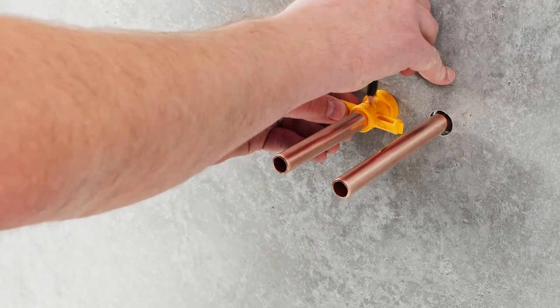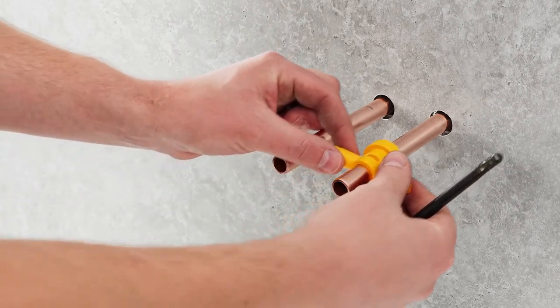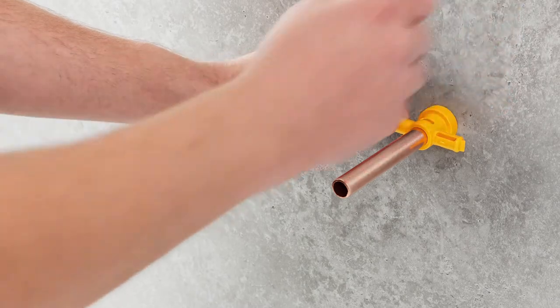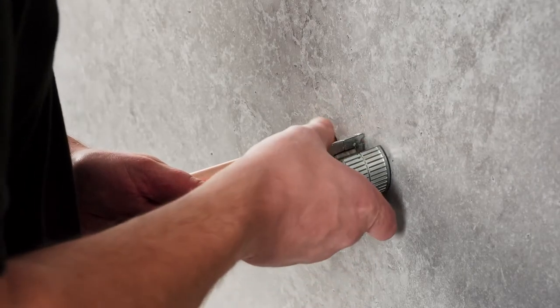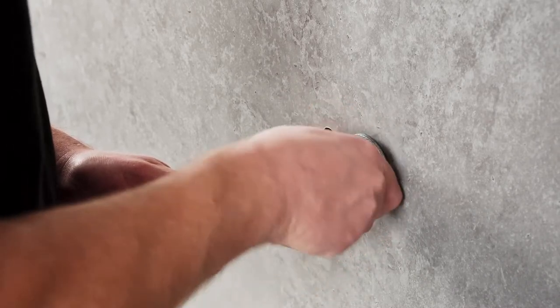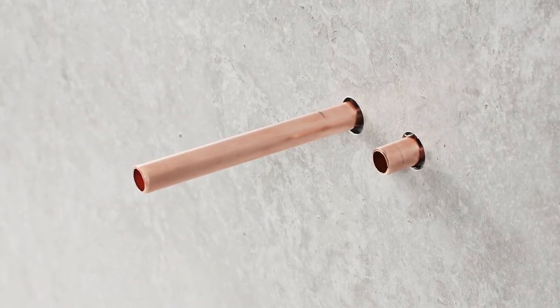Using the installation tool provided or a tape measure, the supply pipework can then be cut back to 19mm from the finished wall surface. Cutting the pipe to size is best done using a pipe slice, taking care that all external burrs are removed to prevent damage to the valve seals when mounting the valve onto the pipework.